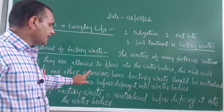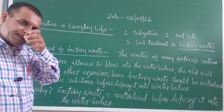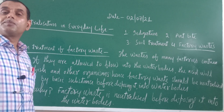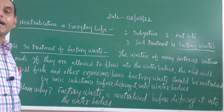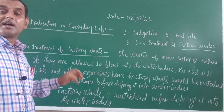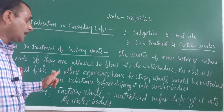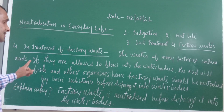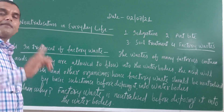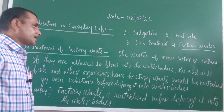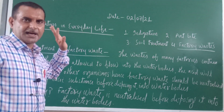There is a question in the NCERT book: factory waste is neutralized before disposing it into water bodies — why? Factory waste should be neutralized before disposing because it contains acids. If allowed to flow into water bodies, it may harm and kill aquatic fish and other organisms. That is why factory waste must be neutralized before disposal.